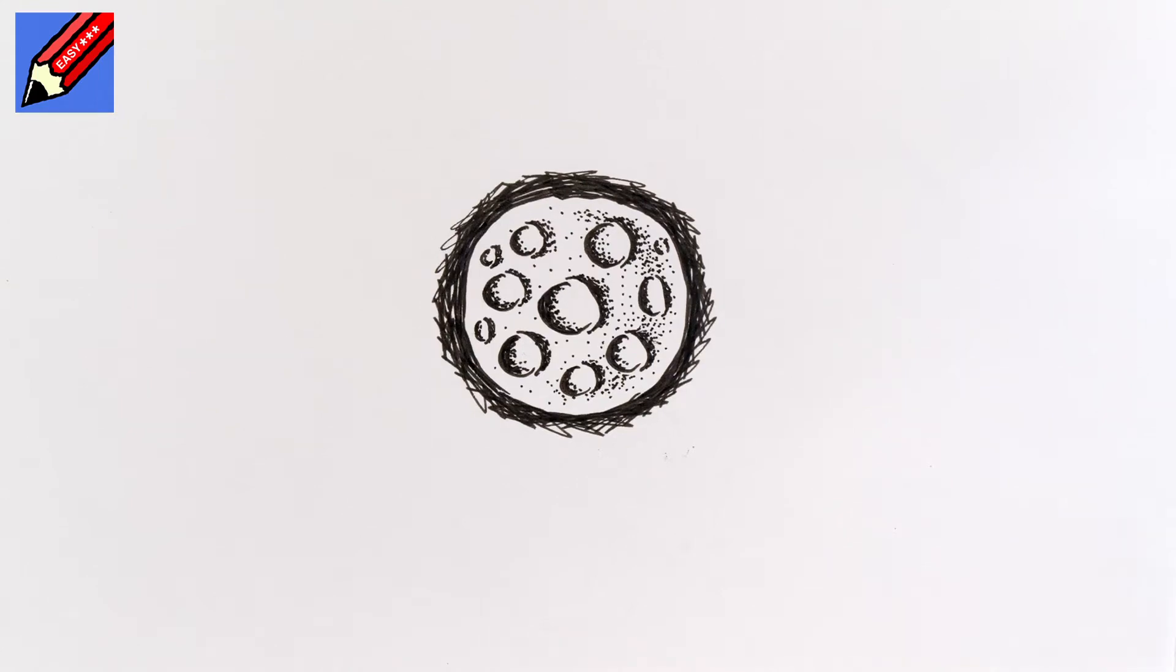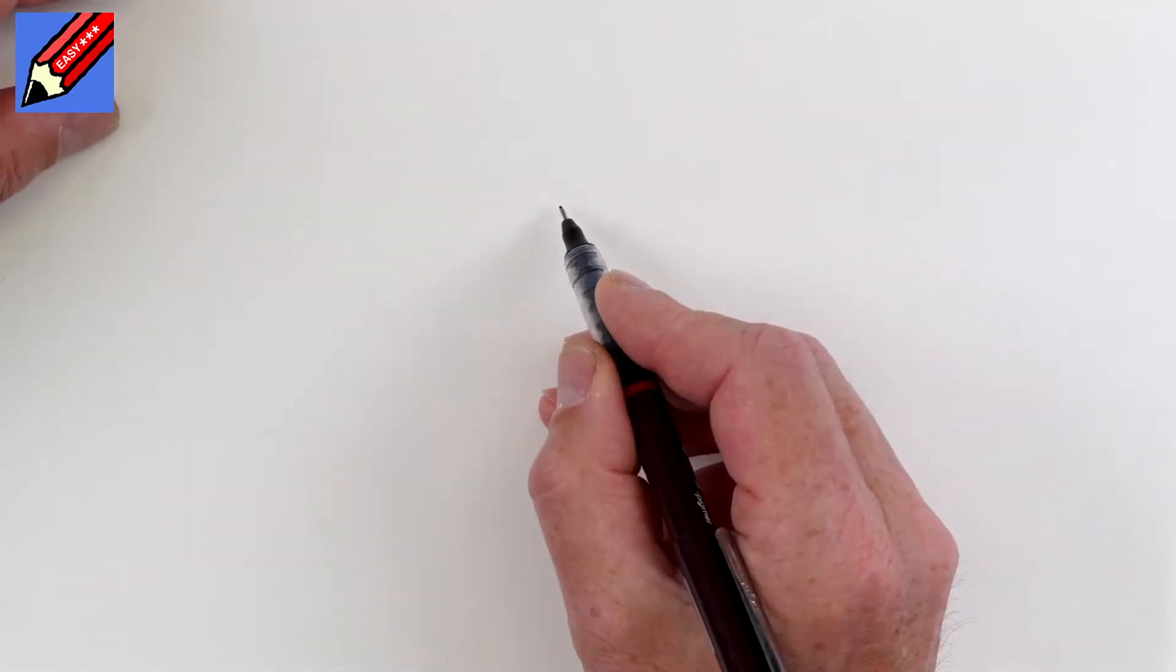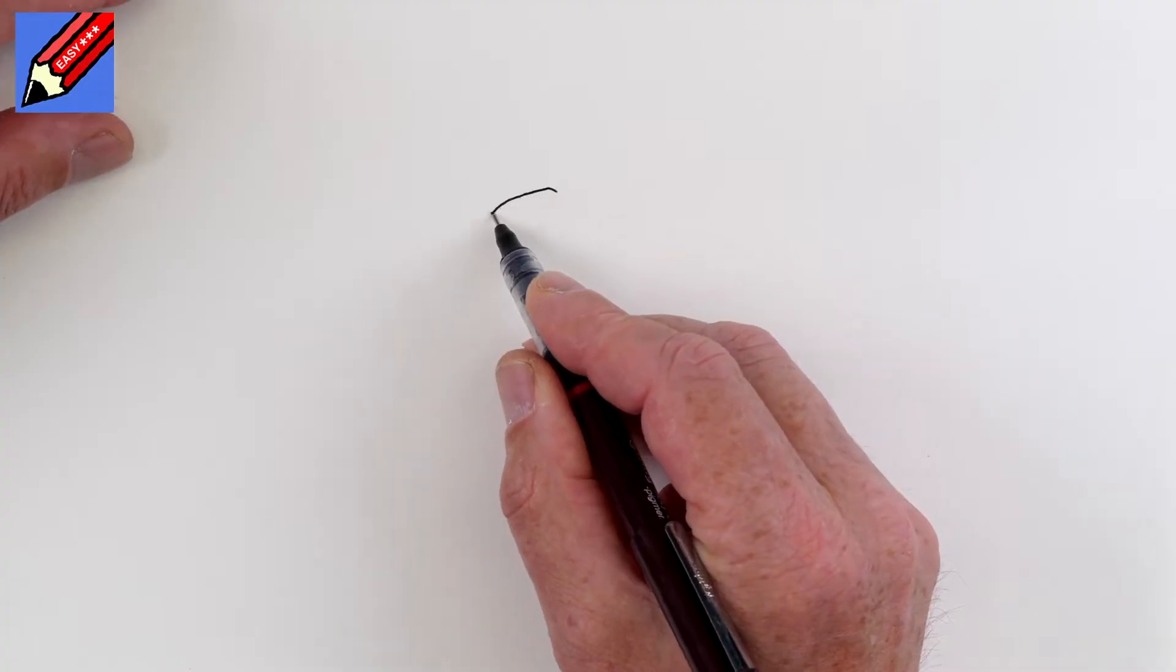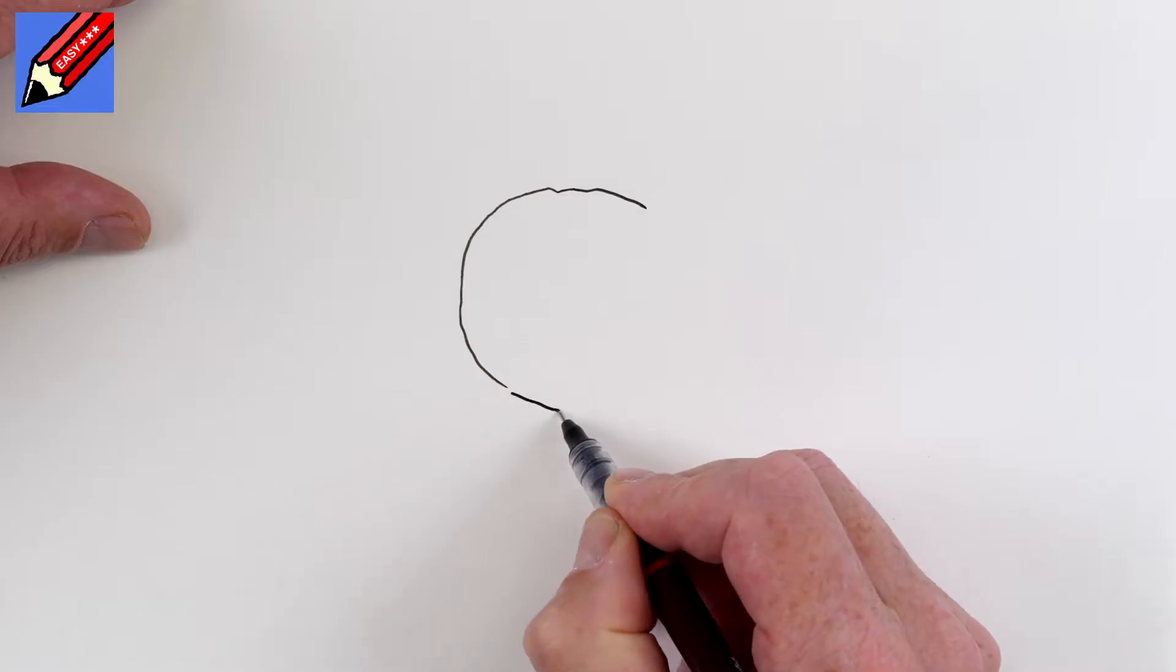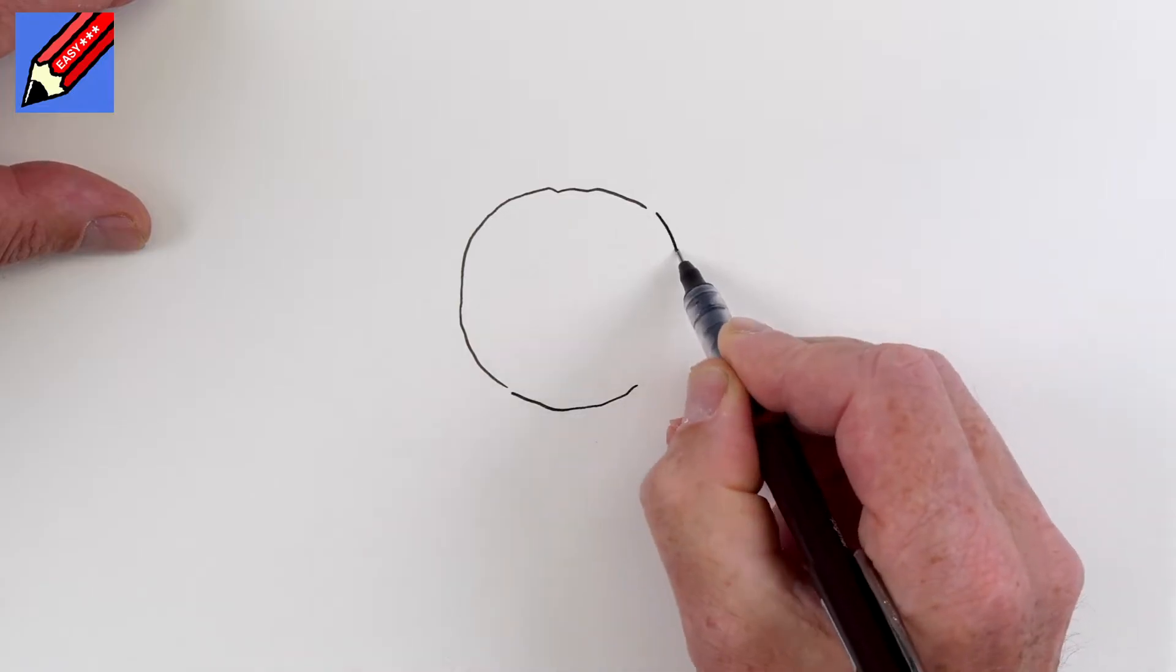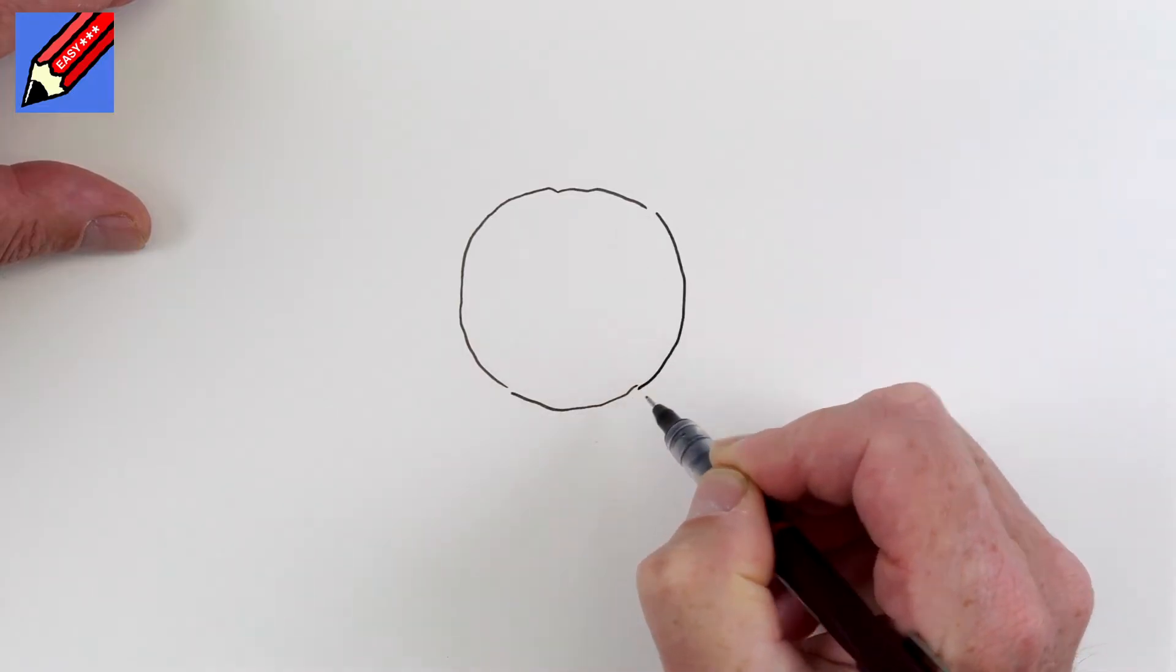How to draw the moon real easy. Let's start by drawing a crumbly edged kind of circle. So it doesn't have to be... Well, it needs to be kind of circular, but it doesn't need to be a perfect edge.